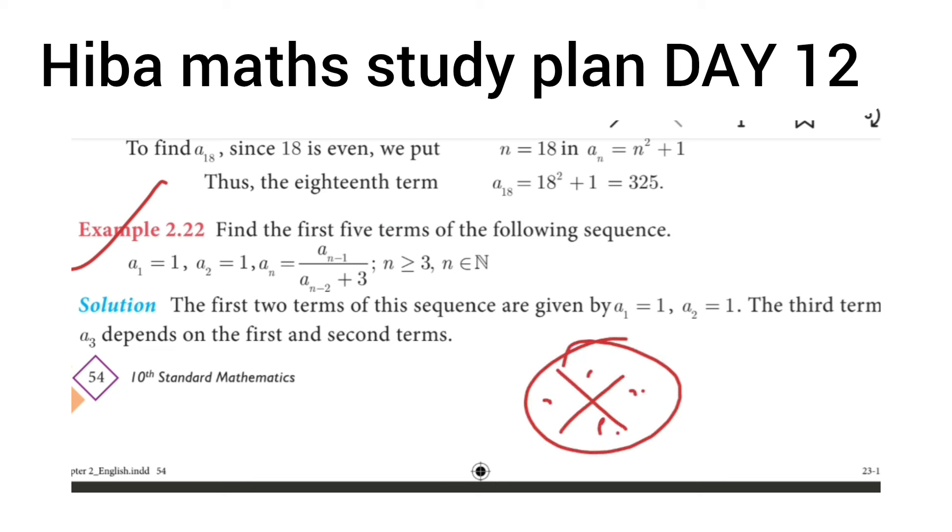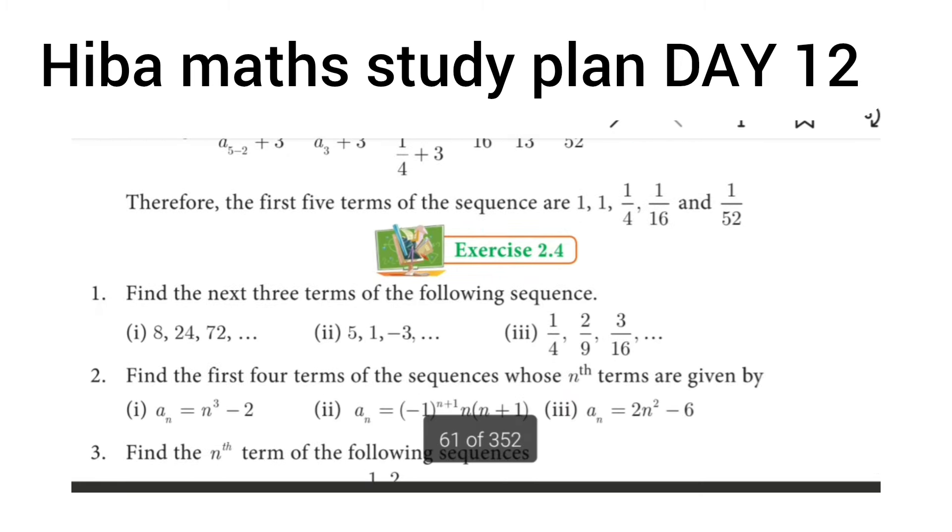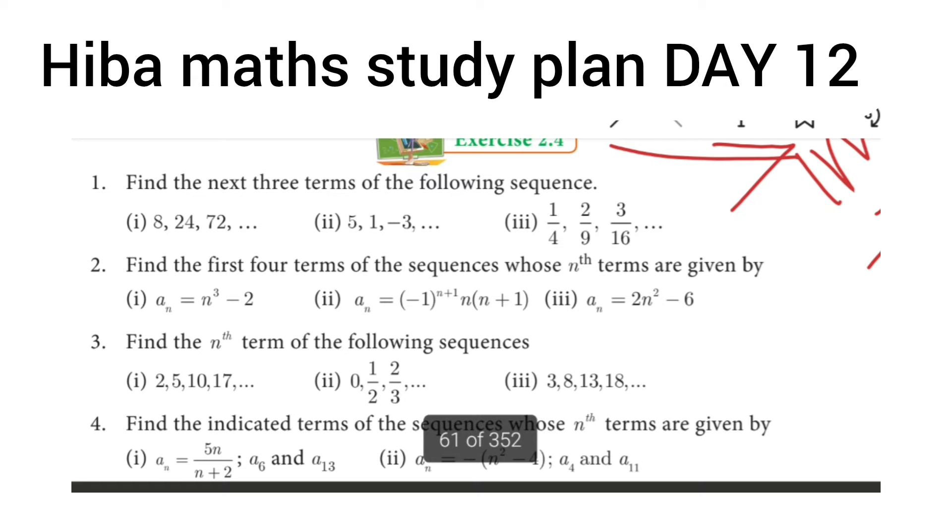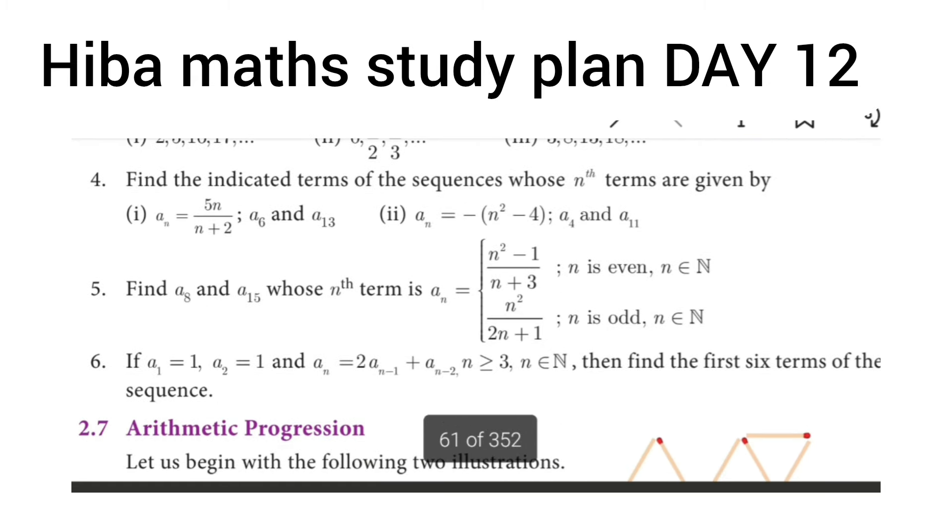We will complete the terms and schedule them. The 5th sum is 5 marks. Find a of 8, that function is 2 marks. Find a of 15, the second is 2 marks.